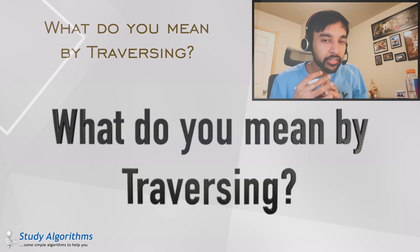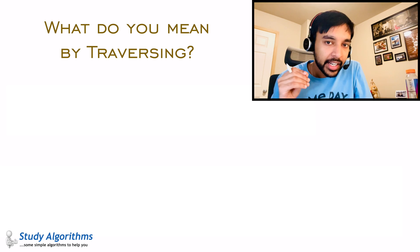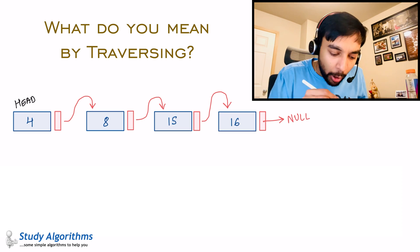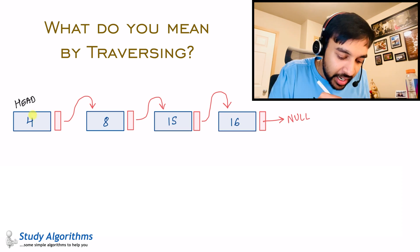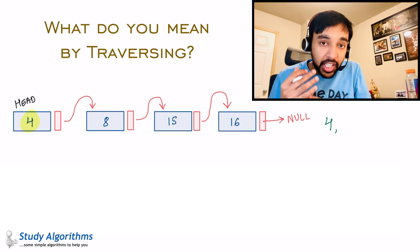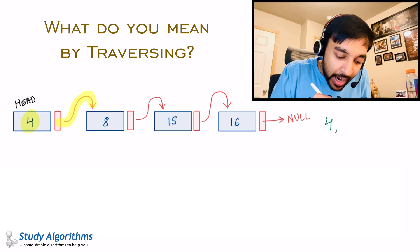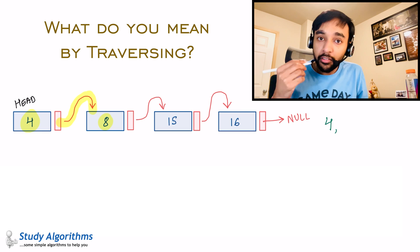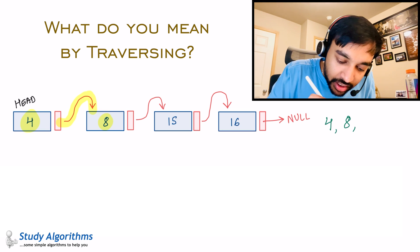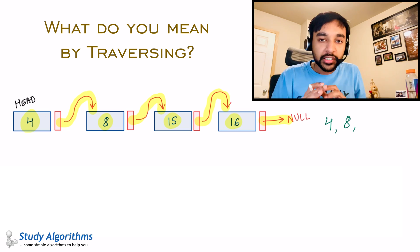Let us quickly recall what traversing a data structure means. Traversing simply means going through all the values present in a data structure. For example, let us take a singly linked list. You have some values in it. You start from the head and see the first value 4. If you print it, you get 4 on the screen. You do a next pointer and reach the next value 8. You can traverse the entire linked list using the next pointer, getting 15 and then 16, and ultimately NULL means you stop. So your output would be 4, 8, 15, and 16.